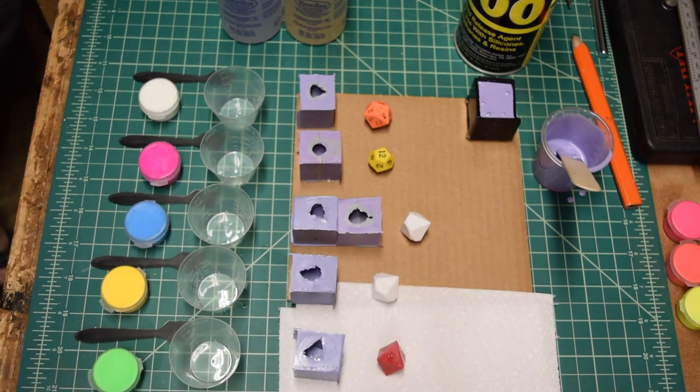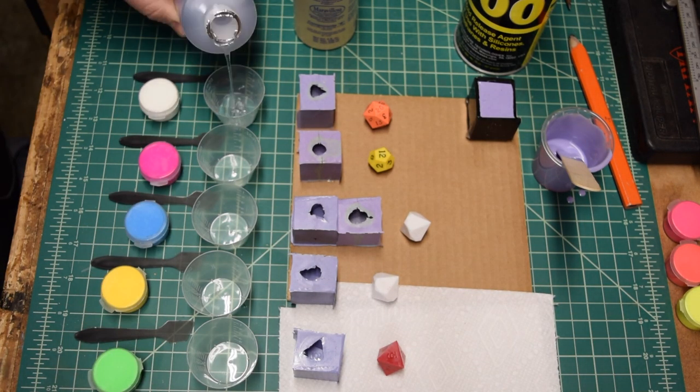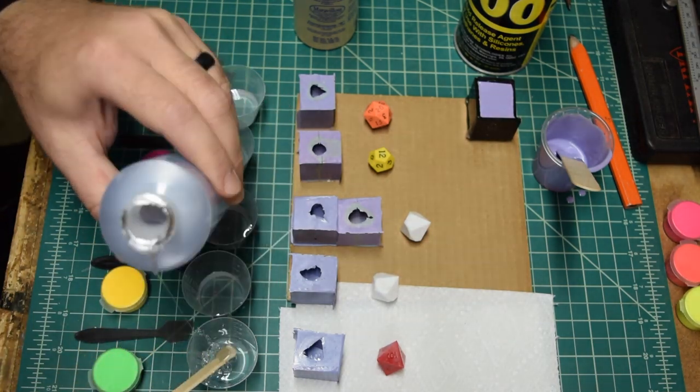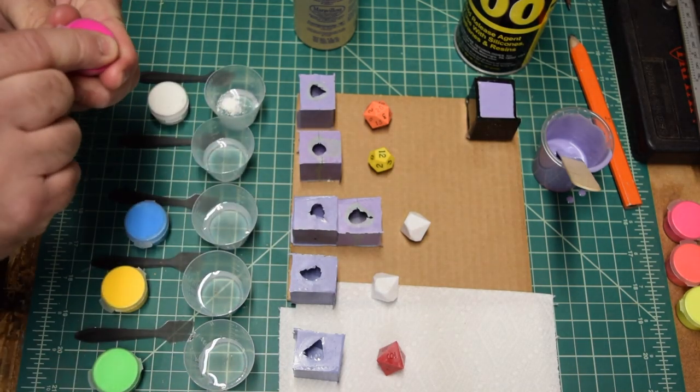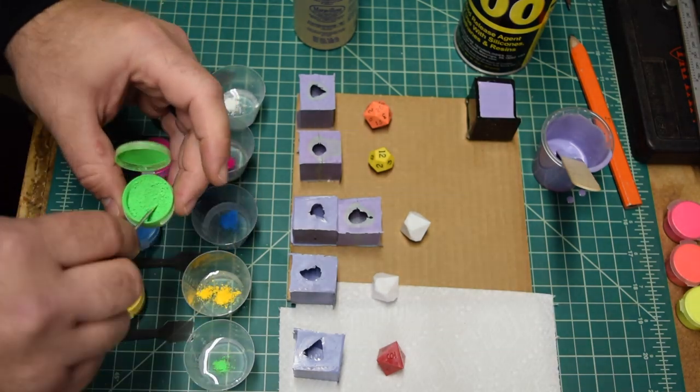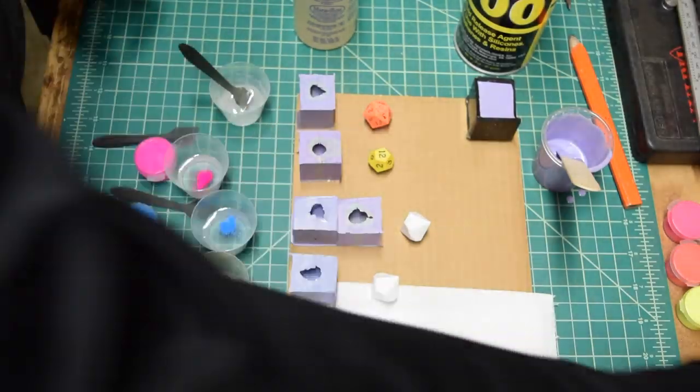After repeating the mold process for the D20, D12, D10, percentile, and D8, it was time to test the UV reactive powder and some clear epoxy resin. The goal is to make a set of dice for Dungeons and Dragons that allows multiple dice to be cast at the same time rather than single dice cast repeatedly.